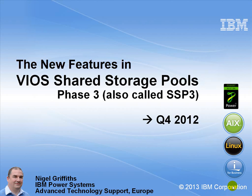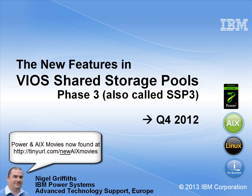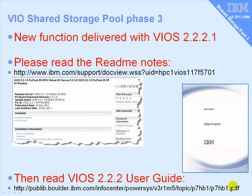My name is Nigel Griffiths, I work in IBM Power Systems Advanced Technology Support in Europe. In this short video we're going to be looking at the VIO Server feature called Shared Storage Pools Phase 3, also known as SSP3. This came out at the end of 2012. All the new features of SSP3 are delivered with the new VIO Server — you just install the latest version or upgrade to the 2221 version of the VIO Server.